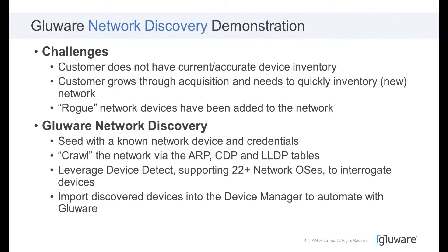In the demo following this slide, we're also going to show you the new network discovery feature, which is new in 3.7. As we work with large enterprises, we often find that customers themselves oftentimes don't have accurate device inventory. So while with Glueware you could provide your inventory list and import it, if you don't have that accurate list, you're struggling to get the systems into Glueware to begin to automate them.